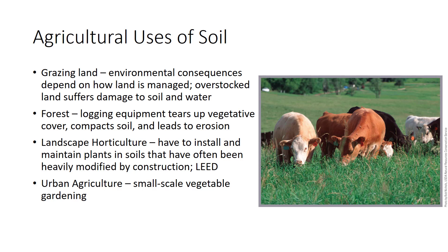Much land in the United States is grazed by cattle and sheep. Range consists largely of native grasses and shrubs, while some non-native grasses are planted through existing vegetation. Because of the size of much rangeland, it is usually loosely managed. The environmental consequences of grazing depend largely on how land is managed; overstocked land suffers damage to soil and water, while proper grazing practices can be quite sustainable. Foresters probably disturb soil the least, but soil management is still a concern. When trees are harvested, logging equipment tears up the vegetative cover and compacts the soil, increasing erosion and leaving the soil a less desirable medium for growth of newly planted seedlings.